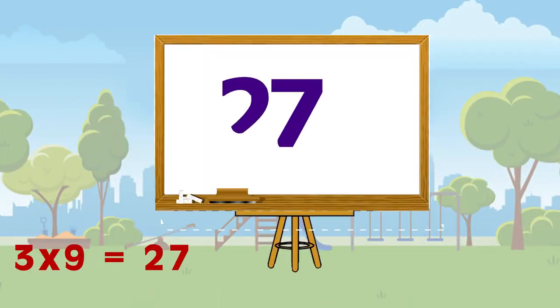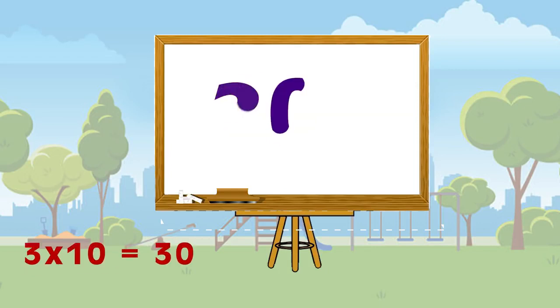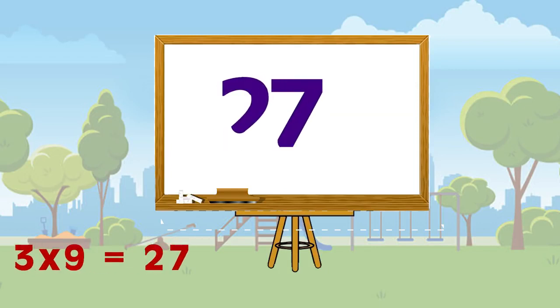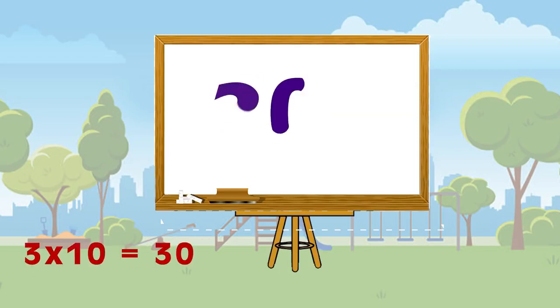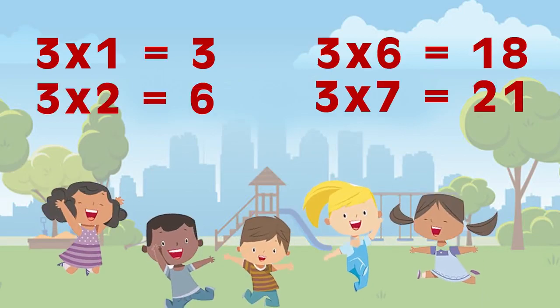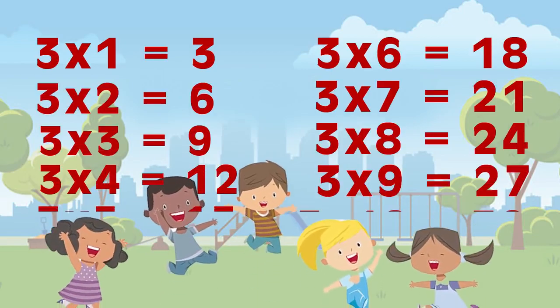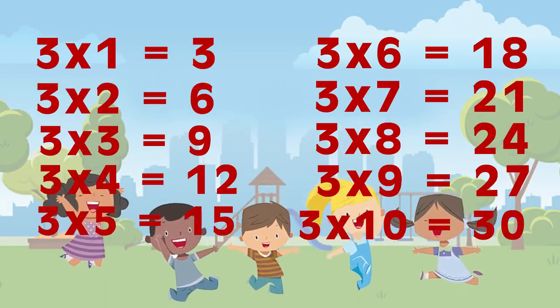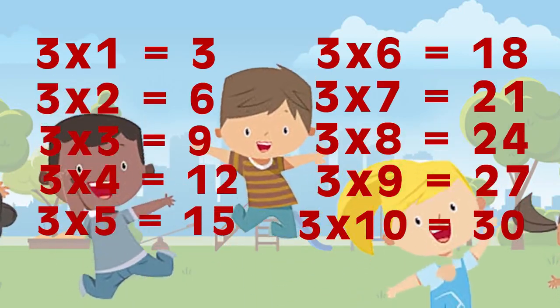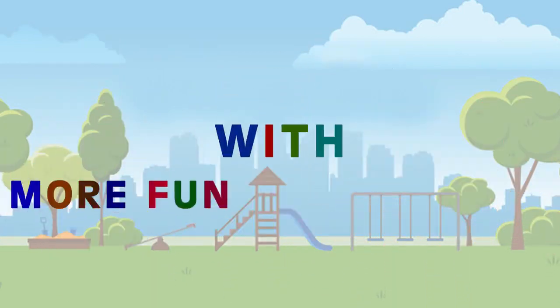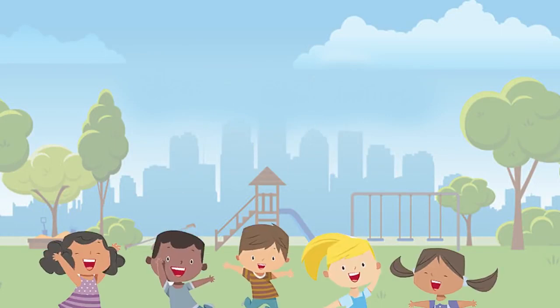Three nines are twenty-seven, three tens are thirty. Three nines are twenty-seven, three tens are thirty. Come on children, let us learn, let us learn, with more fun. Yeah!